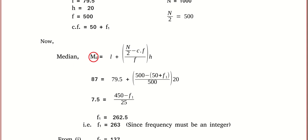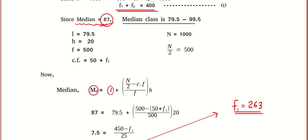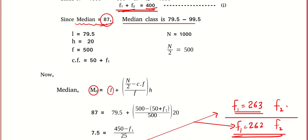Plugging in the median value, lower bound, and other known values gives the value of f1. There is a small problem: the frequency came out as a decimal, which is not possible since frequencies must be whole numbers. So one possibility is to take f1 as 263 and plug into the first equation f1 + f2 = 400 to find f2. Another option is f1 = 262, giving a different f2. There will be two possible answers.